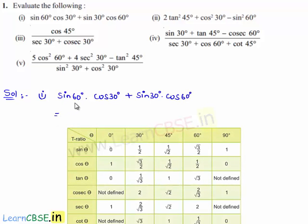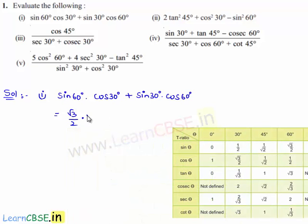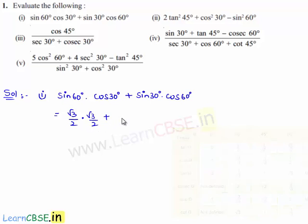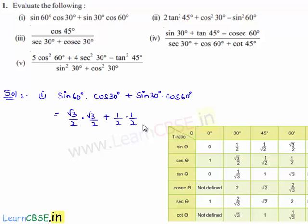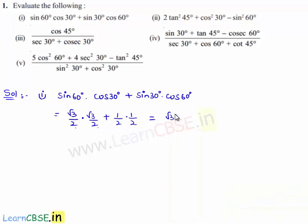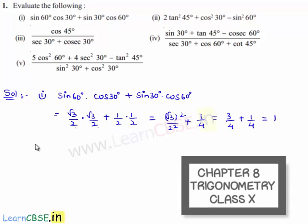From the table we have the value of sin 60 degrees as root 3 by 2, into cos 30 degrees which is again root 3 by 2, plus sin 30 degrees is 1 by 2 and cos 60 degrees is again 1 by 2. This equals root 3 by 2 into root 3 by 2, which is root 3 whole square by 2 square, plus 1 by 2 into 1 by 2 is 1 by 4. Root 3 whole square is 3 by 4, so the answer is 3 by 4 plus 1 by 4.